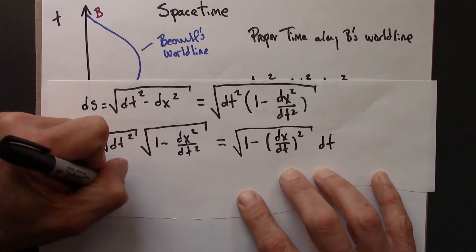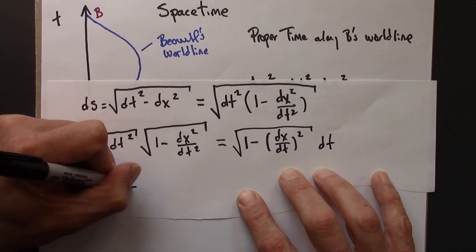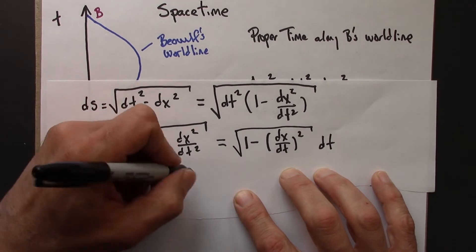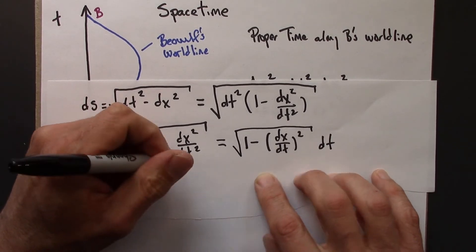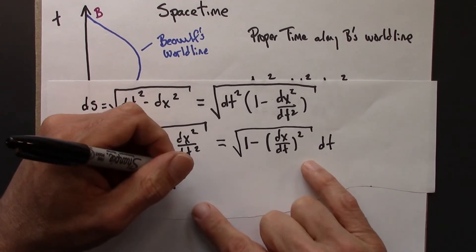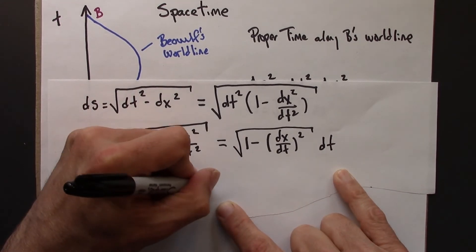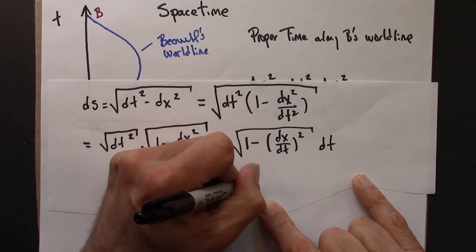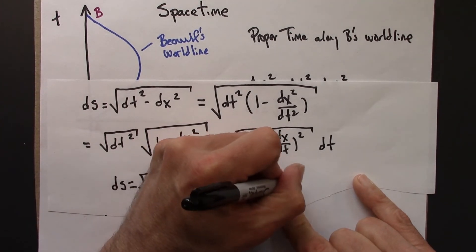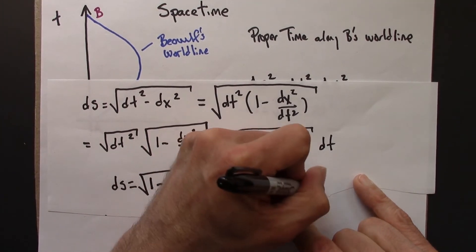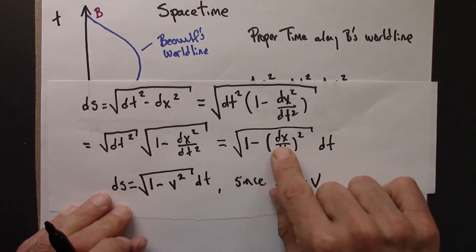This turns into this: 1 minus v squared. I can write this as this. This is just velocity, the speed along the world line.